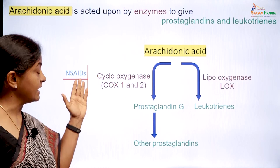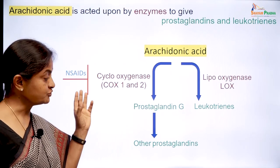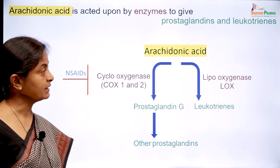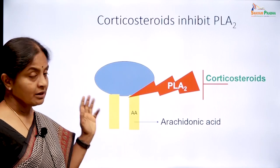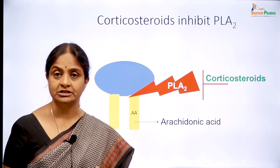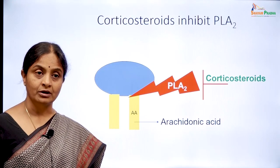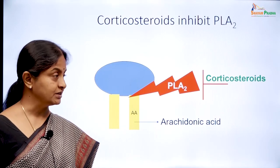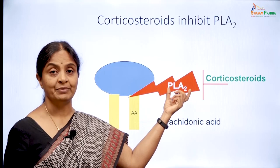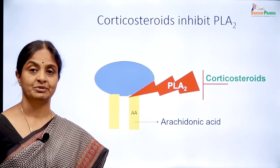A set of compounds called NSAIDs, or non-steroidal anti-inflammatory drugs, help to reduce inflammation by inhibiting the cyclooxygenase enzyme. Corticosteroids, whether endogenous or given therapeutically, also reduce inflammation by inhibiting the phospholipase A2 enzyme, which would otherwise release arachidonic acid from the membrane phospholipids.